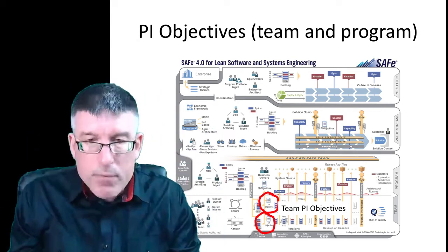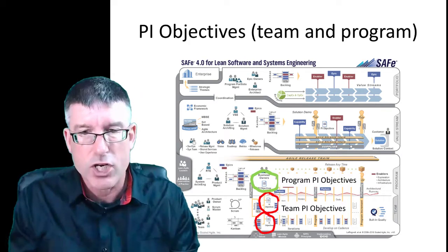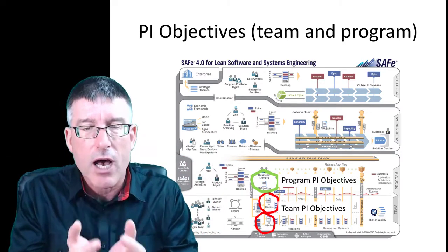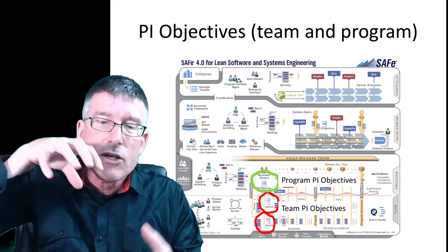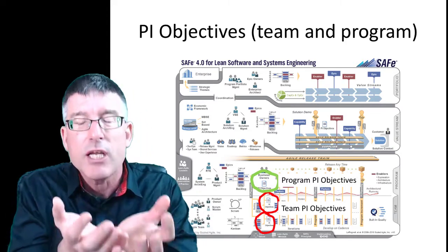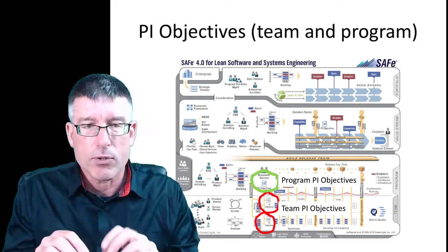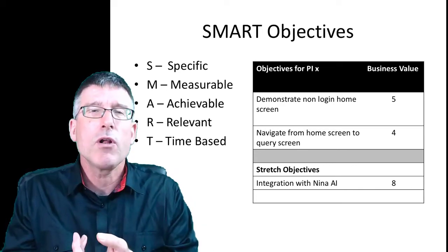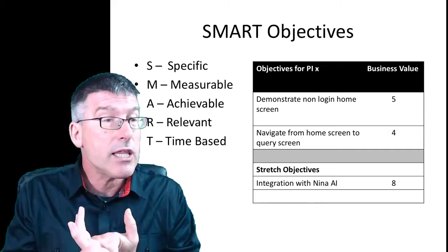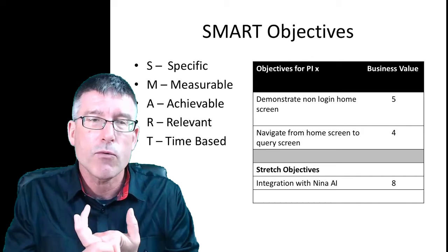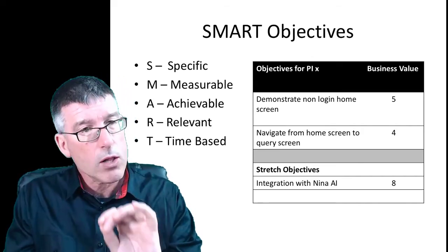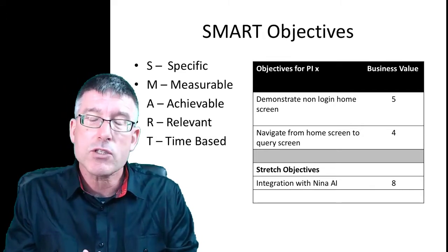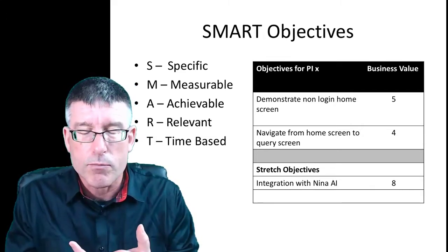Each team develops a set of PI objectives for what they want to achieve or be able to demonstrate by the end of the PI. Those objectives are rolled up into a program objective, so the program PI objectives represent the collection of all the team PI objectives — created upward by induction from the plans the teams are able to construct. The objectives are also SMART: they're not pie in the sky. They're specific — typically we will implement this feature or make this release. They are measurable, achievable, relevant to the business, and time-based.